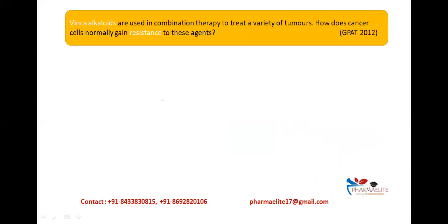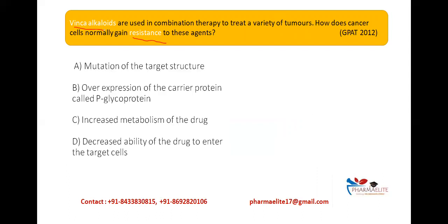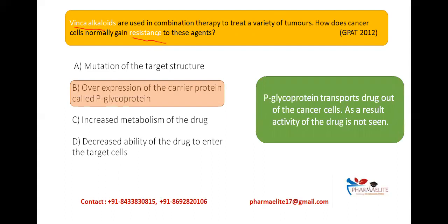A question from GPAT 2012 asked: Vinca alkaloids are used in combination therapy to treat a variety of tumors — how does the cancer cell normally gain resistance to these agents? The options were: mutation of the target structure, overexpression of the carrier protein P-glycoprotein, increased metabolism of the drug, or decreased ability of the drug to enter target cells. While all options can cause resistance to drugs in general, the specific mechanism for Vinca alkaloids is overexpression of P-glycoprotein, which transports the drug out of the cancer cell, reducing its activity.